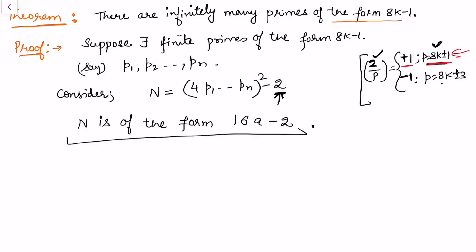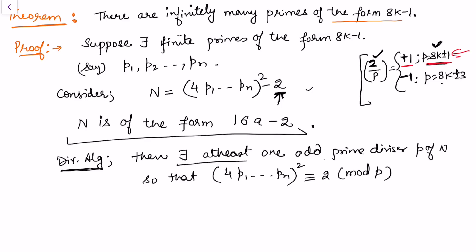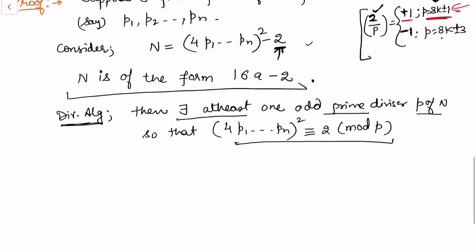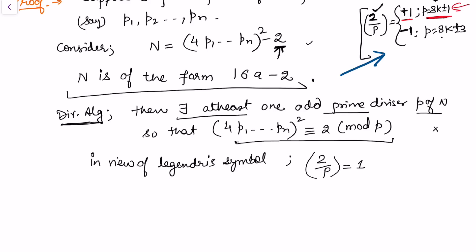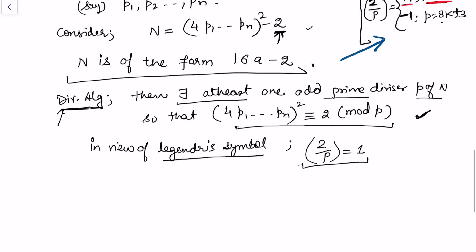By the division algorithm, there exists at least one odd prime p such that p divides N, meaning N ≡ 0 (mod p), and hence 4·(p₁·...·pₙ)² ≡ 2 (mod p). In view of the Legendre symbol, this congruence is solvable if (2/p) = 1. Since the congruence must hold, we conclude that (2/p) = 1, which means p ≡ ±1 (mod 8).